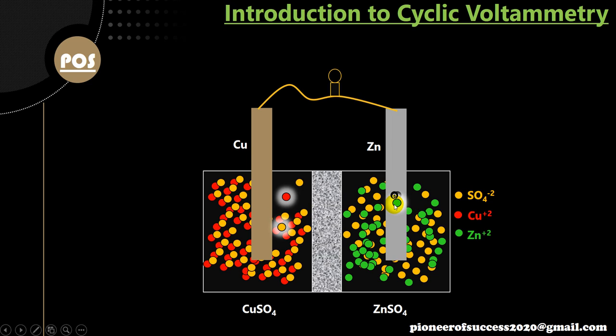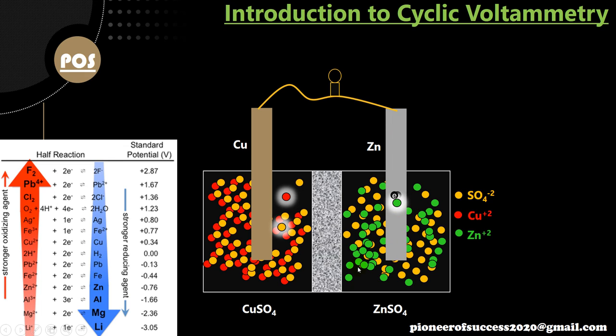We dip a copper electrode inside the copper sulphate solution and a zinc bar inside the zinc sulphate solution. If you have a copper sulphate solution and dip copper into it, that creates a half cell. Similarly, zinc sulphate solution with a zinc rod creates another half cell. The porous plug joins these two half cells, giving us a complete electrochemical cell.